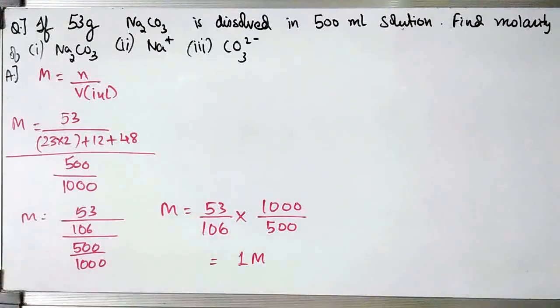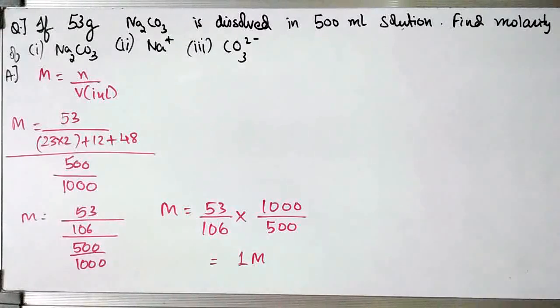When you solve all of this you get the molarity to be 1M. Solve it by yourself and check — the molarity will come as 1M. Now let's find the molarity of the two ions.